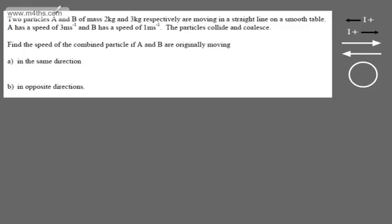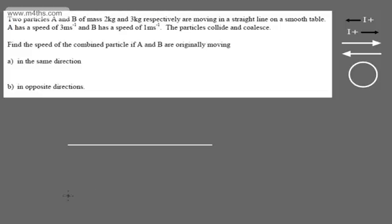Let's look at another one. Two particles A and B of mass 2 kg and 3 kg respectively are moving in a straight line on a smooth table. A has a speed of 3 m/s and B has a speed of 1 m/s. The particles collide and coalesce — they come together and move off as one. We're asked to find the speed of the combined particle if: (a) A and B are originally moving in the same direction, and (b) in the opposite direction.